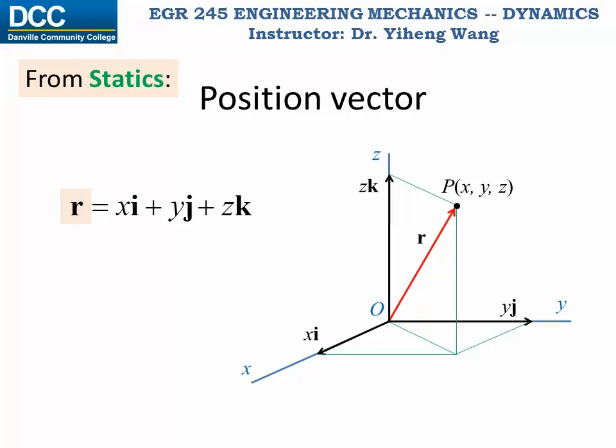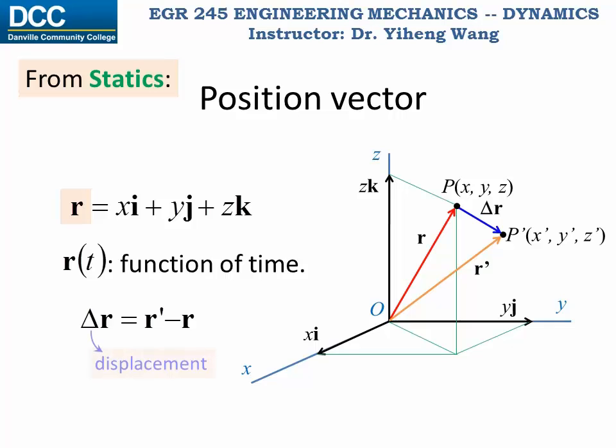As long as there's motion within the same coordinate system, position is a function of time. So after some time, this particle has moved to a new location, with new coordinates x prime, y prime, and z prime. And its position is now represented by a new position vector r prime. The change in position of this particle, which is r prime minus r, is defined as the displacement. As you can see, displacement is also a vector.